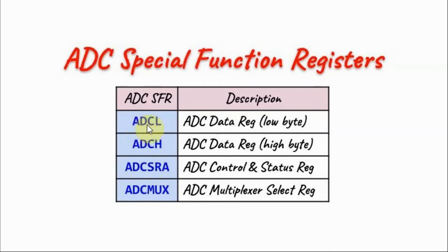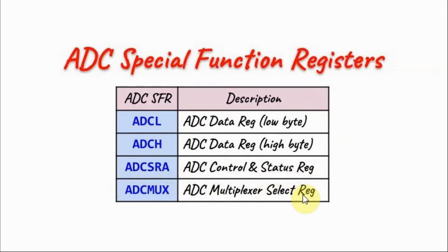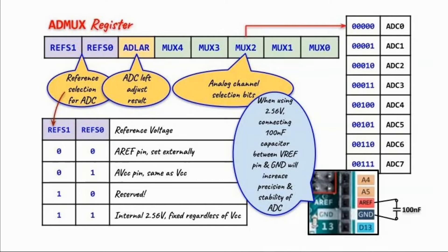We have ADCL, which is the data register that stores the low byte of the result, and ADCH, which stores the high byte of the result. We have ADCSRA, which is the control and status register, and ADMUX, which is the multiplexer select register. Let's have a close look at the ADC multiplexer register.